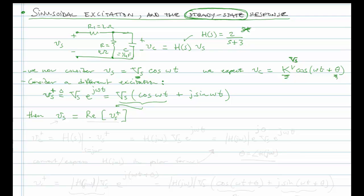So we now define vc plus is going to be equal to the transfer function h of s evaluated at j omega times vs plus. Now we've seen this before, where the response is equal to the transfer function times the excitation. The only difference here is that we're considering this specific excitation. And we have h of j omega times capital Vs e to the j omega t.